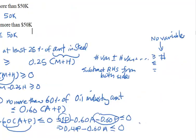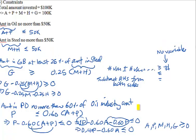We also need a non-negativity constraint: A, P, M, H, G ≥ 0.